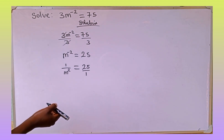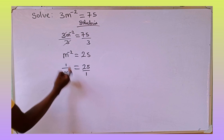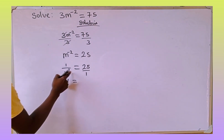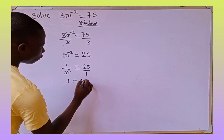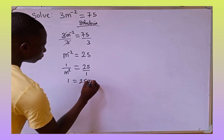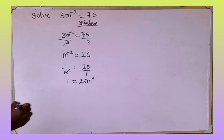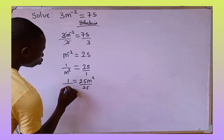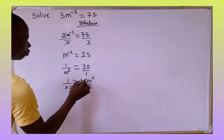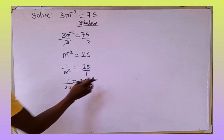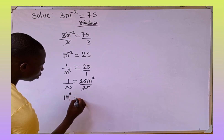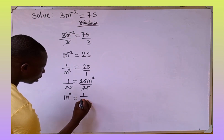Now the next thing we are going to do is to cross multiply. 1 multiplied by 1 is going to give us 25. The next thing we are going to do is to divide through by the coefficient of m squared, which is 25, so that this 25 is going to cancel out this 25. In the right hand side we are left with only m to the power of 2, which is equal to 1 over 25.